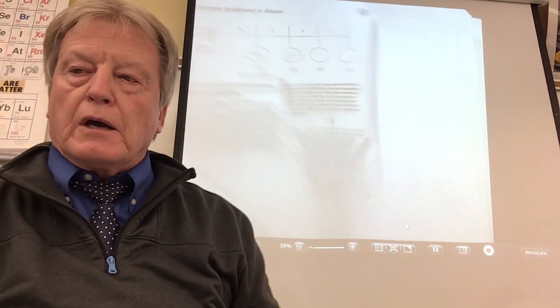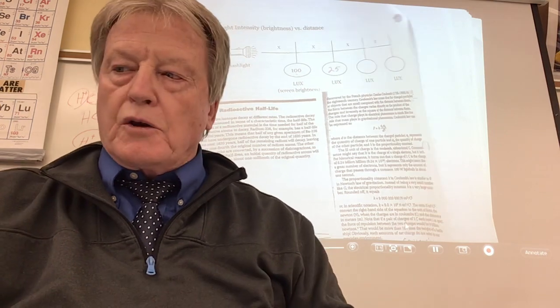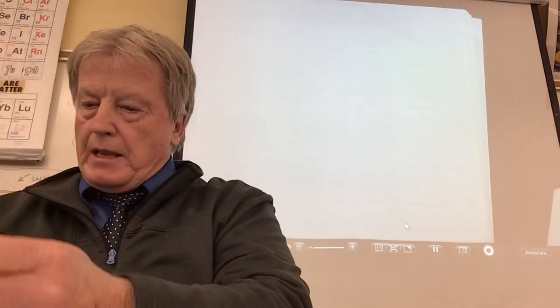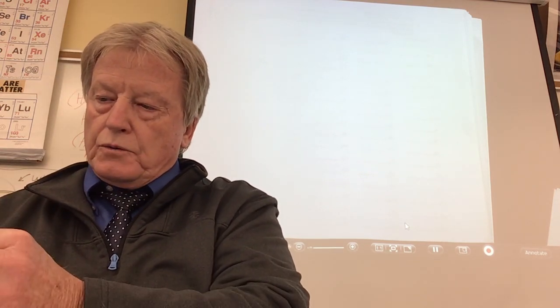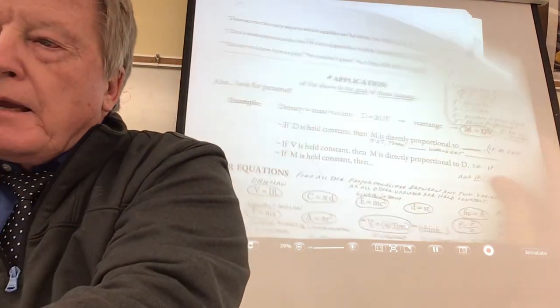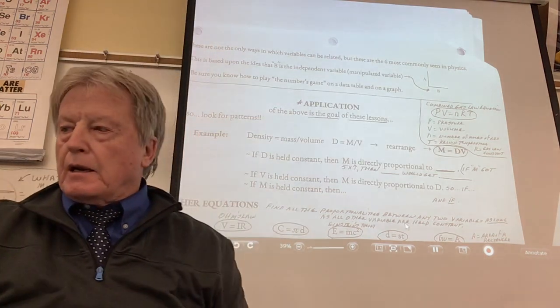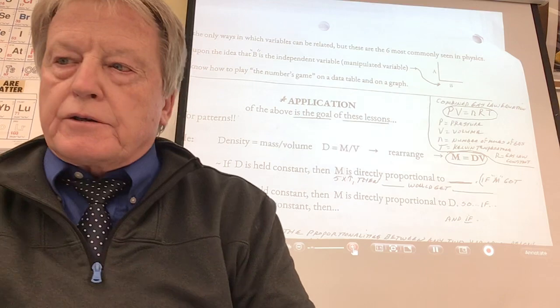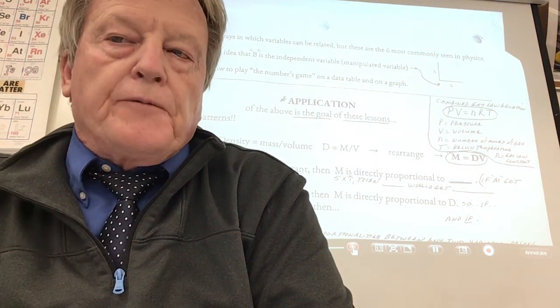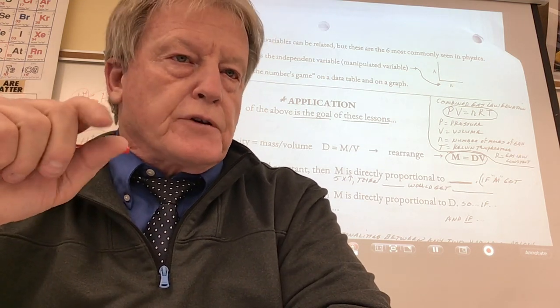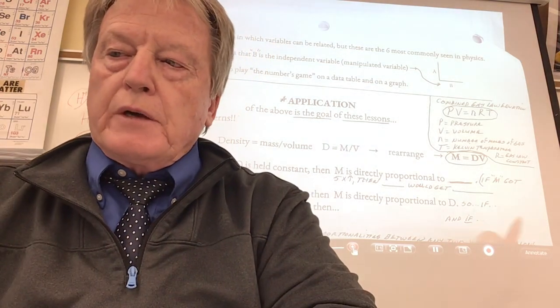Now I want to move into another realm — where you actually look at equations and find out what kind of proportionalities they are. In your package, go to the page that looks like a bunch of equations. So you now know you could look at a data table, or look at a graph, or do a secondary graph to straighten out a curve to prove the proportionality. But what if you were given an equation? Let's try a simple one — density. Density equals mass over volume. If I multiply both sides by V and take it out of fractional form: M equals DV.